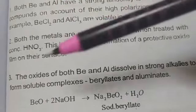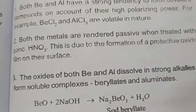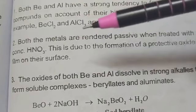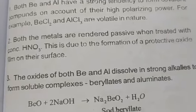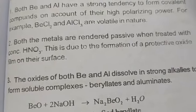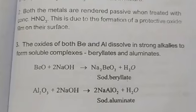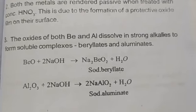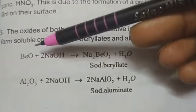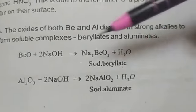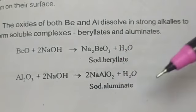Both metals are rendered passive when treated with concentrated nitric acid, meaning both beryllium and aluminium are unreactive toward concentrated nitric acid. The reason is the formation of a protective oxide film on the surface of both beryllium and aluminium. Next, reaction with sodium hydroxide: both beryllium oxide and aluminium oxide react with sodium hydroxide to form sodium beryllate and sodium aluminate, respectively.